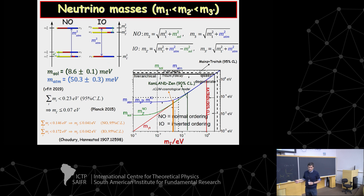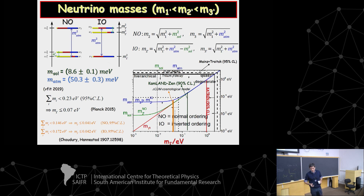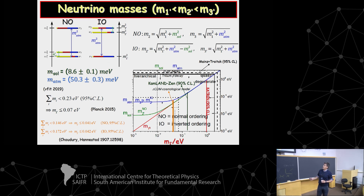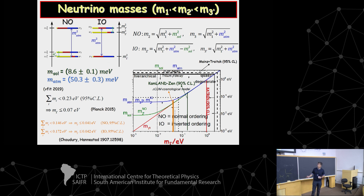On neutrino masses: we have information from neutrino oscillation experiments on two mass-squared differences. Because of this, we know there are two schemes since the sign of the atmospheric delta-m-squared is not known. You can have two different possibilities for ordering the neutrinos — normal or inverted ordering. What is still unknown is the absolute neutrino mass scale, parameterized by the lightest neutrino mass. If the lightest neutrino mass is much bigger than the atmospheric scale, neutrinos are necessarily quasi-degenerate; if it's smaller than the solar scale (~10 meV), there is a hierarchy.